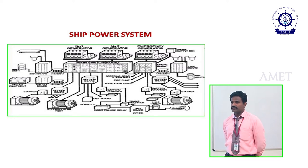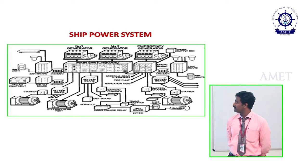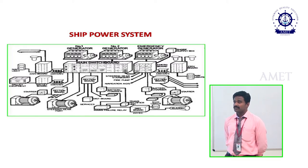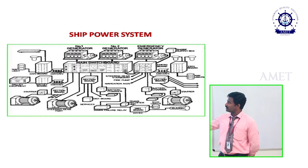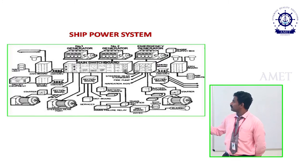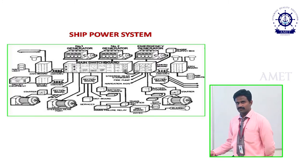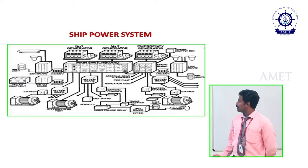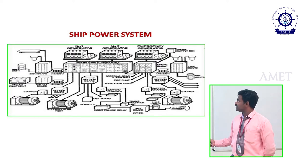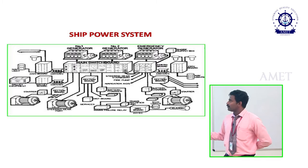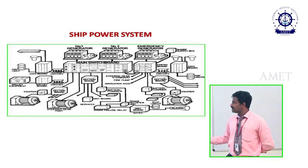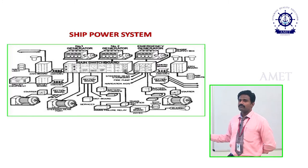The number of generators depends upon the requirement of the ship. Here there are only two generators and one emergency generator. The two main generators are connected to the main switchboard. From the main switchboard, power is distributed to various loads. There is also an alternate generator — the emergency generator — which is also coupled with the main switchboard.